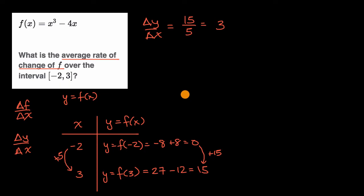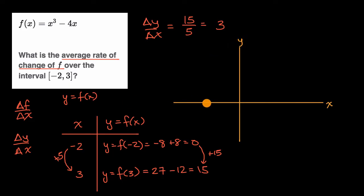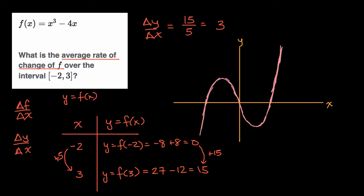If you wanted to think about this visually, I could try to sketch this. So this is the x-axis, the y-axis, and our function does something like this. At x equals negative two, f of x is zero. Then it goes up and comes back down, and then it does something like this. The interval we care about goes from negative two to three. At the left end of the interval, our function is equal to zero, so we're at that point. And at the right end, f of three is 15, so we are up here someplace.